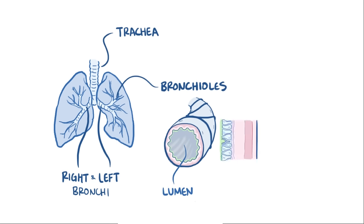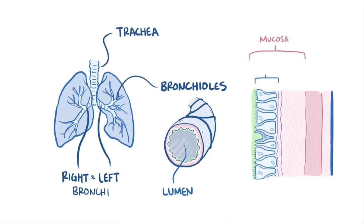In the bronchioles, you've got the lumen, the mucosa, which includes the inner lining of epithelial cells as well as the lamina propria, and the submucosa, which is where the smooth muscle lives.